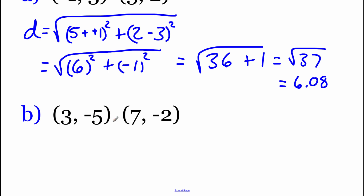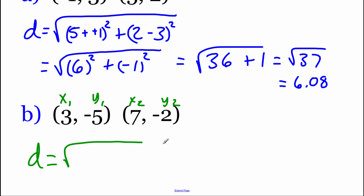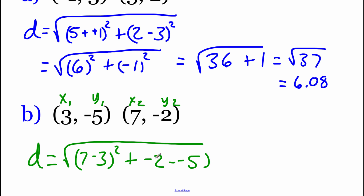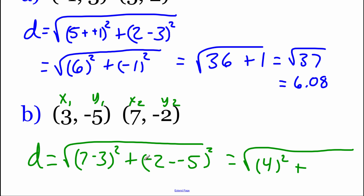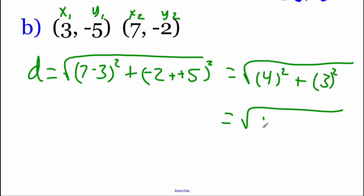For our last example, we've got 3, negative 5 and 7, negative 2. Just like the last one, I'm going to label x1, y1 and x2, y2, and start setting up the distance formula: d equals the square root of (7 minus 3) squared plus (negative 2 minus negative 5) squared. Simplifying: 7 minus 3 is 4 — square that — and negative 2 minus negative 5 is a double negative that turns into addition, so negative 2 plus 5 is 3 — square that. 4 squared is 16, 3 squared is 9. Adding those together underneath the radical, we get the square root of 25. This one works out because it's a perfect square — the square root of 25 is just 5.